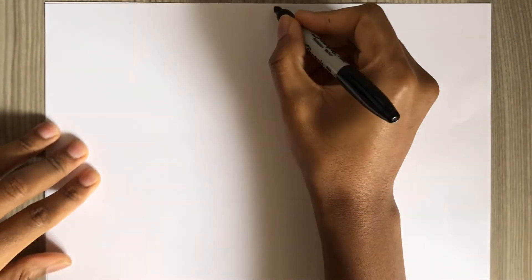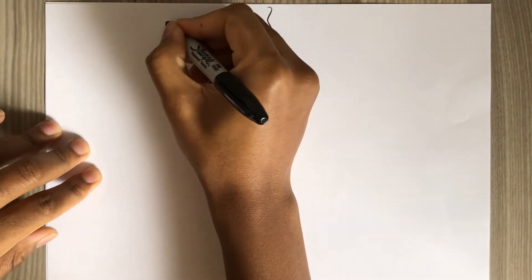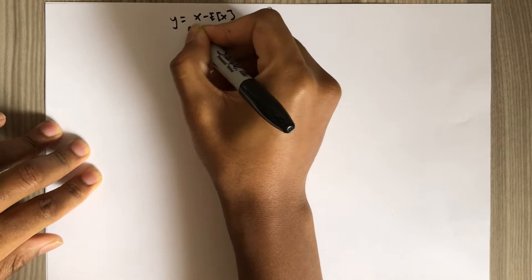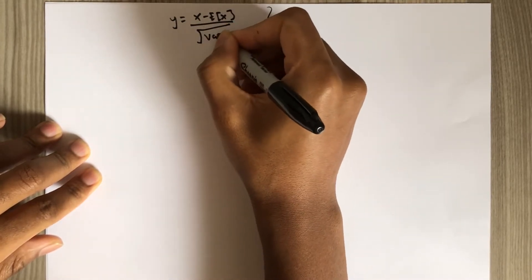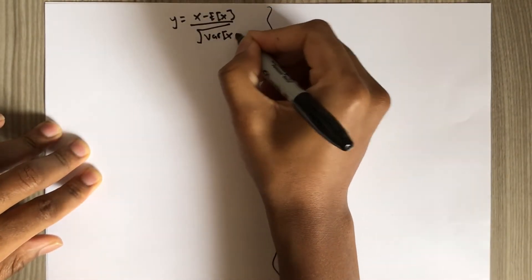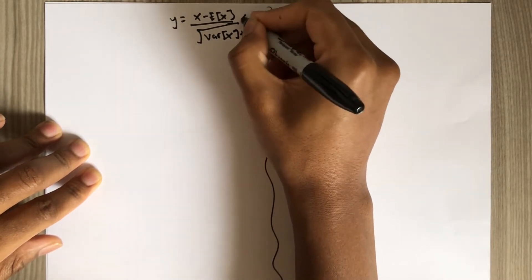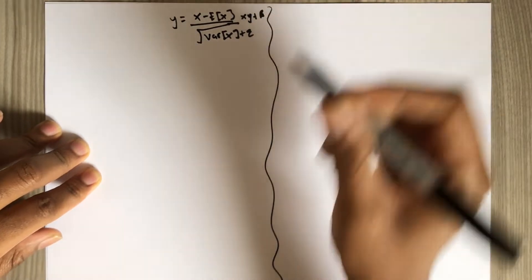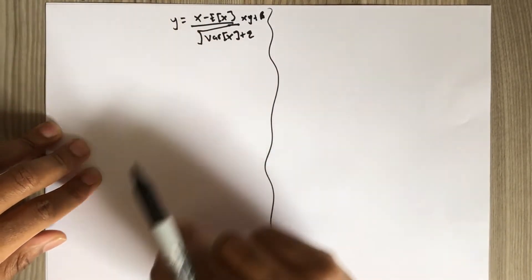So let me divide this into two. This layer normalization uses this formula. It might actually look very familiar to the batch normalization formula. There is some slight variation times some parameters gamma and beta. So this is the formula that this layer normalization uses.